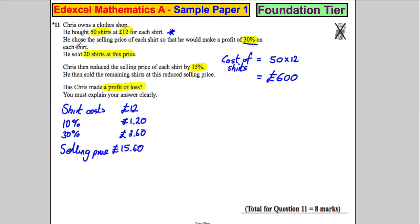And it tells us he sold 20 at that. So 20 shirts would be 20 multiplied by £15.60. Now the easiest way to do this is to do 10 multiplied by £15.60, which is 156, and then double that, which would be £312. So that would be £312 for 20 shirts.